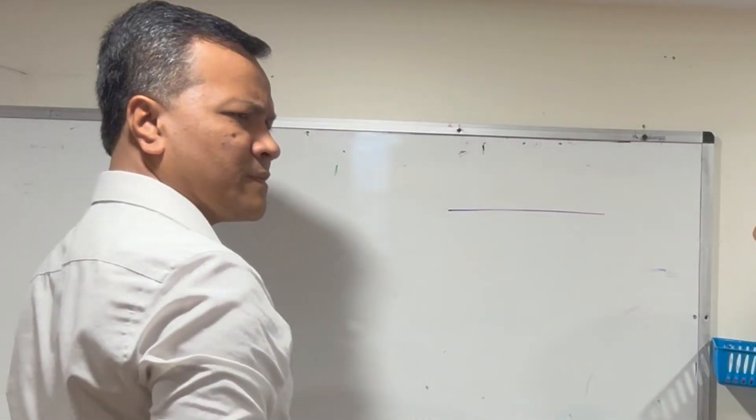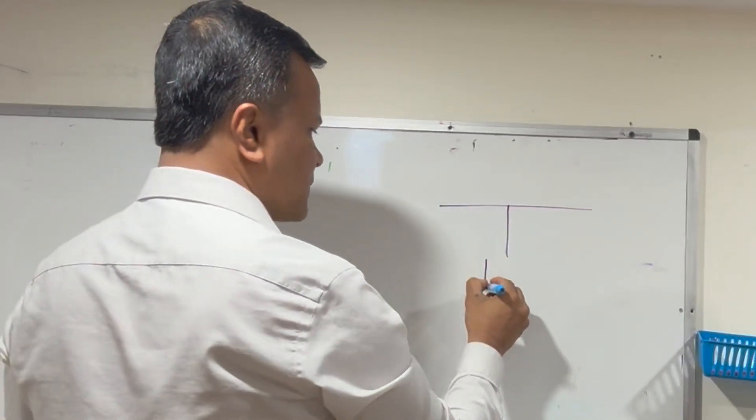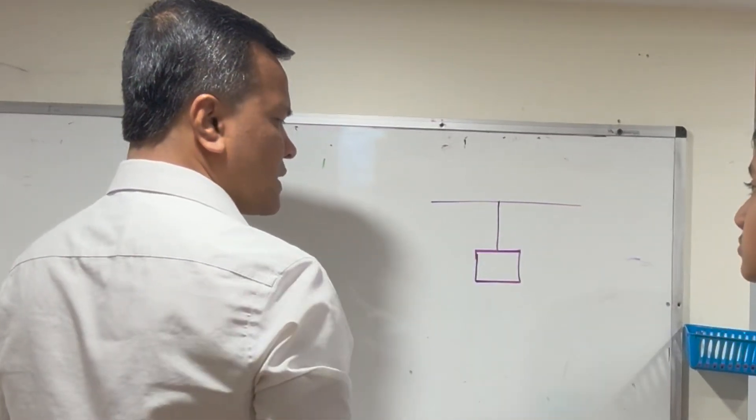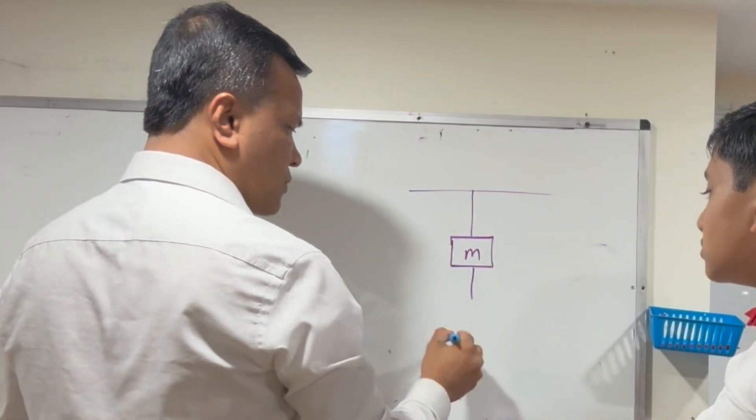Can you consider a system? Consider a rope with no mass, then a box with mass m, then another rope.